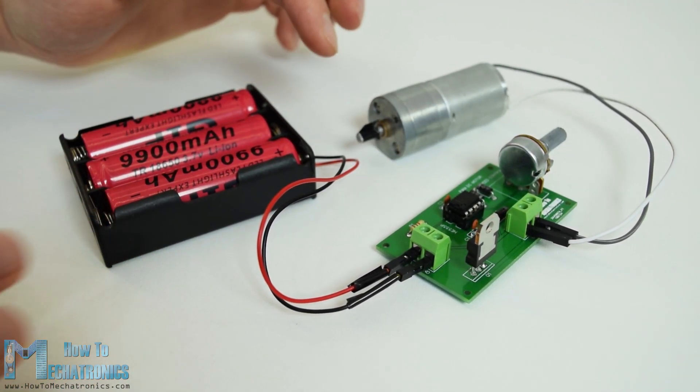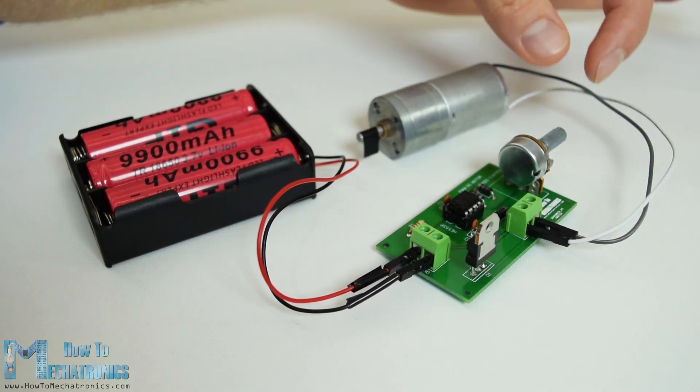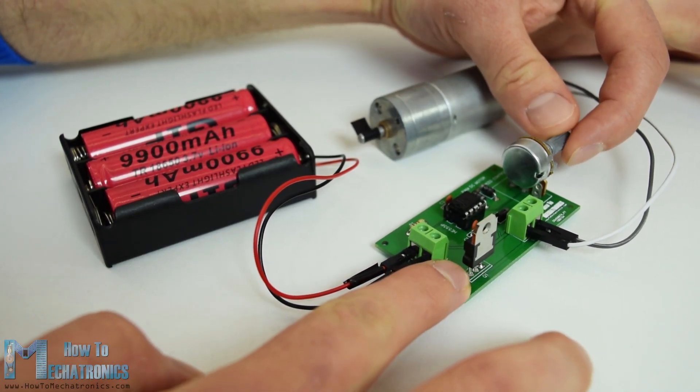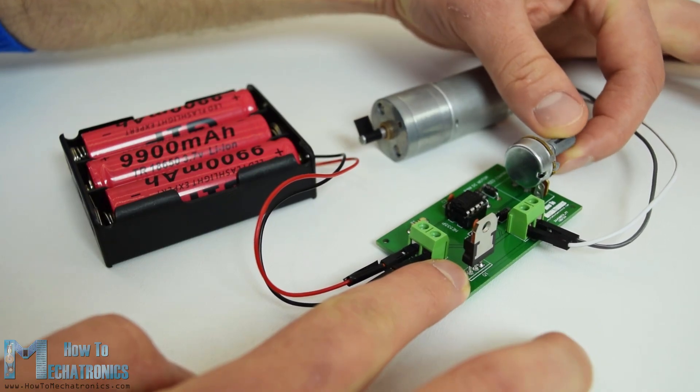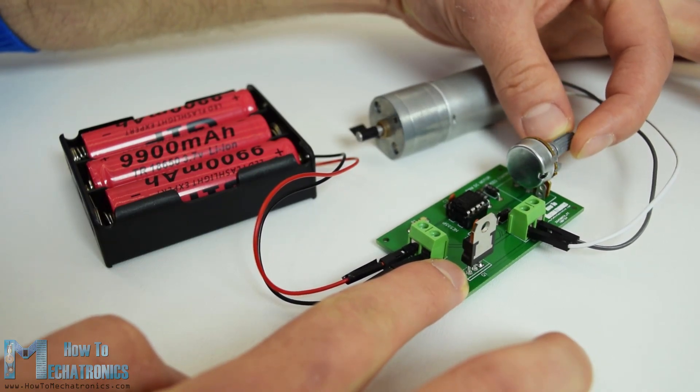So now using the potentiometer we are able to control the speed of the motor, or the PWM signal produced by the 555 timer IC.